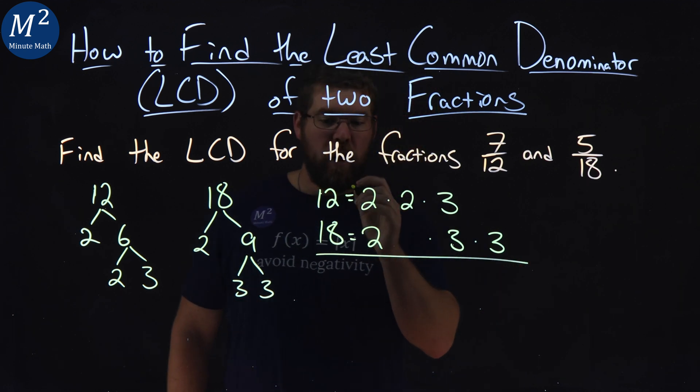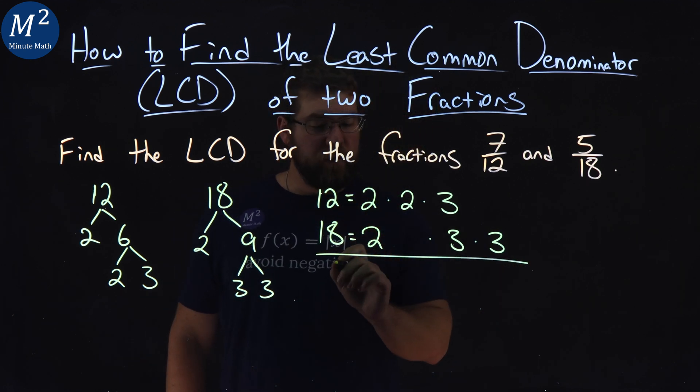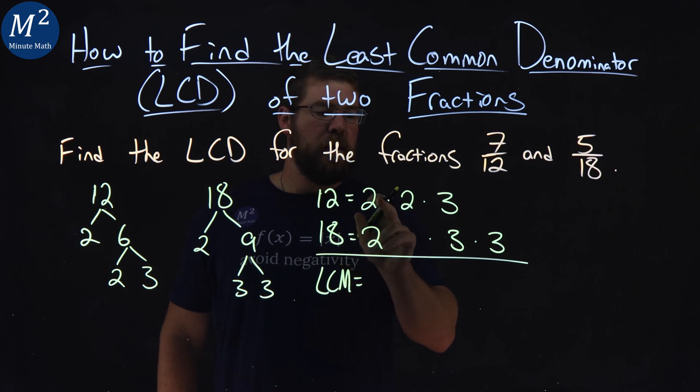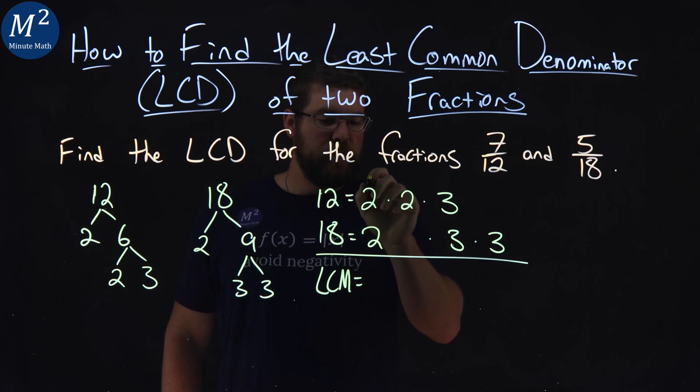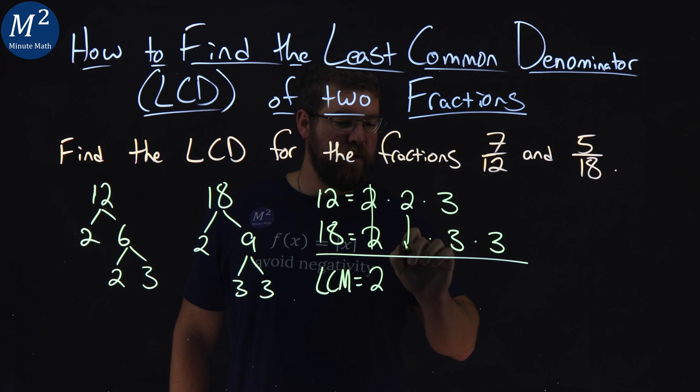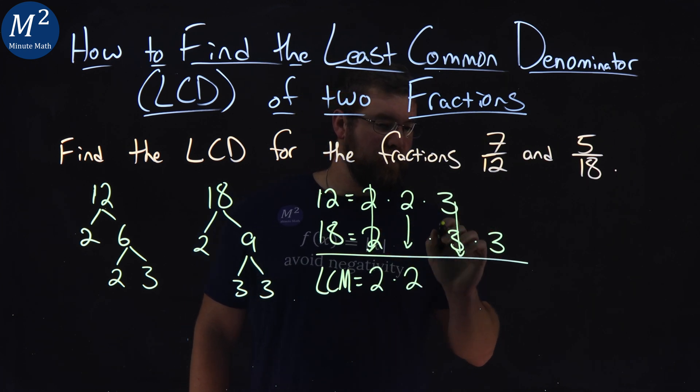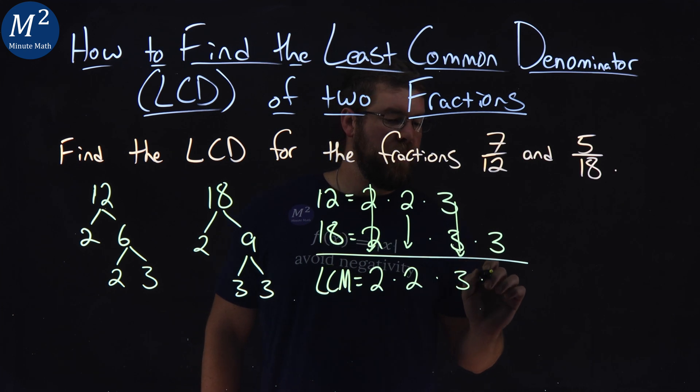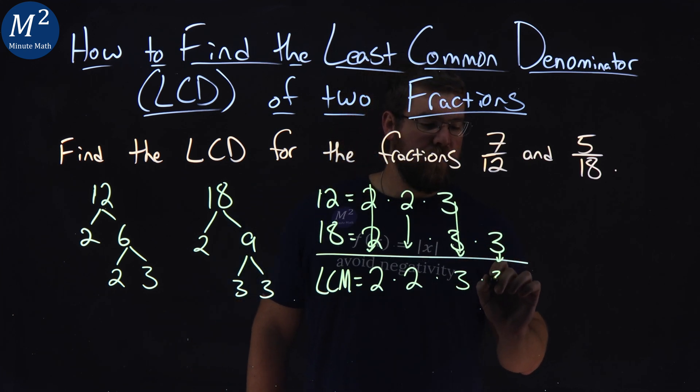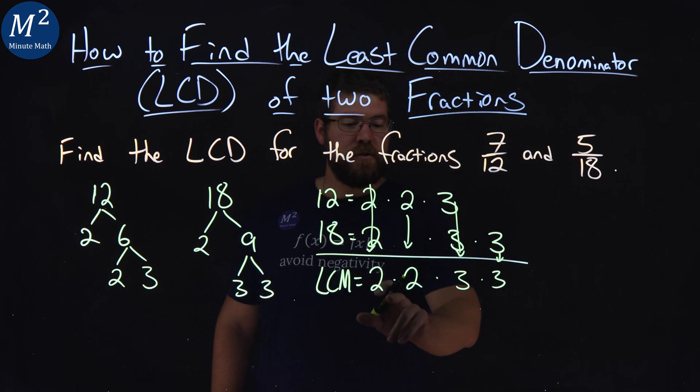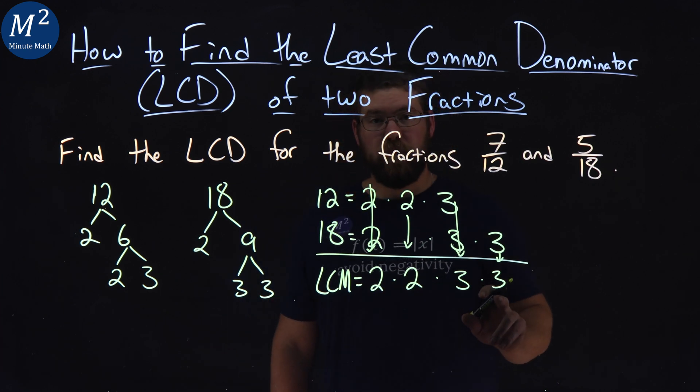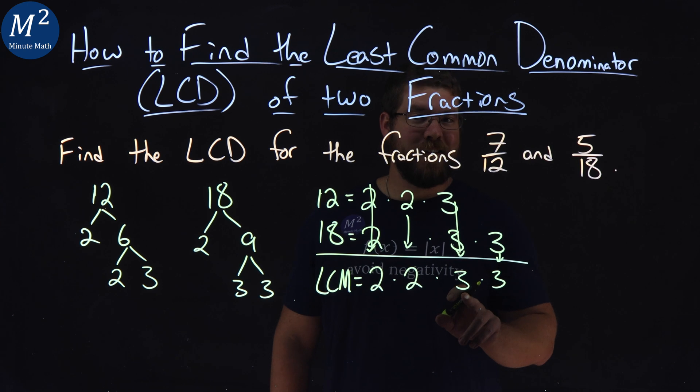From there, our least common multiple of the two numbers, 12 and 18, is... we line up the 2s. So these 2s come down just to be one 2. This one comes down here. Times 2. This one comes down. The two 3s, since they're lined up, is one 3. And another one comes down. Got the other 3. 2 times 2 times 3 times 3 comes out to be 2 times 2 is 4. Times 3 is 12. Times 3 is 36.